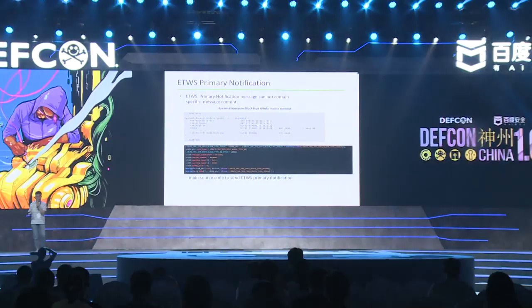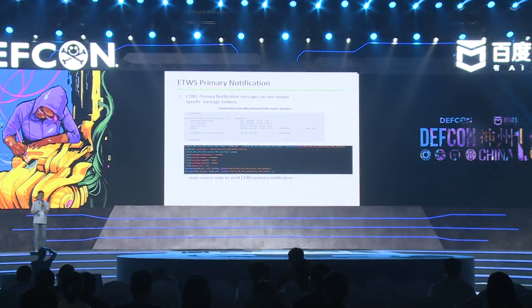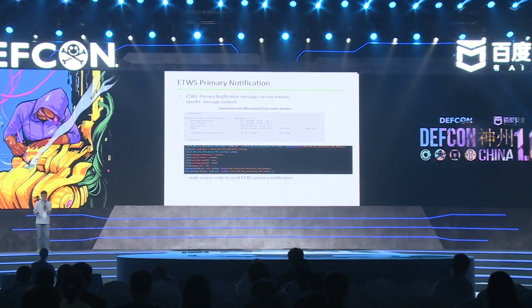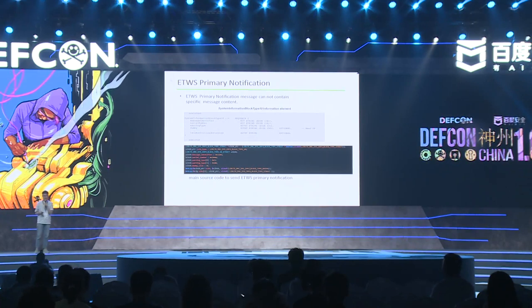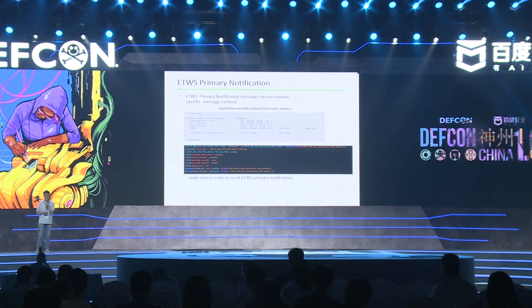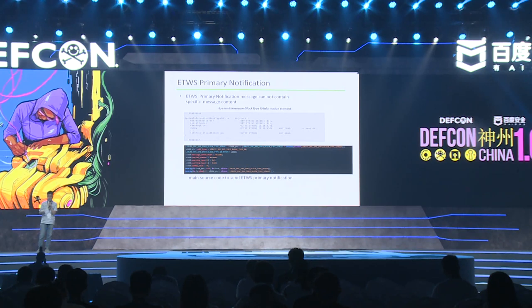Here I'm going to talk about the detail of the primary notification. This is the structure of SIB10, which defines the primary notification — it is a screenshot from the LTE standard specification. The picture below shows the source code we added in srsLTE to transmit the warning message, performing ASN.1 encoding. Because SIB10 doesn't natively support sending the warning message, we had to add the source code ourselves.